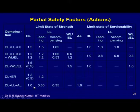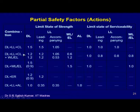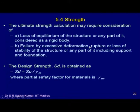For the limit state of serviceability, all factors are typically 1, but when combining more than one variable load — such as dead load, live load, and wind load — the code allows reduction of the variable load factor to 0.8. Ultimate strength calculations require consideration of loss of equilibrium, failure by excessive deformation, rupture, or loss of stability, including second-order P-delta effects from sway.